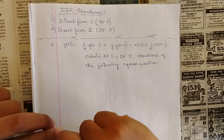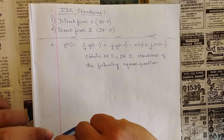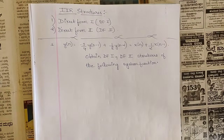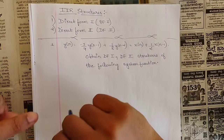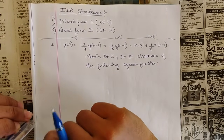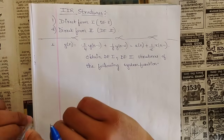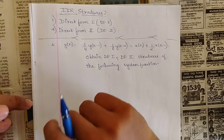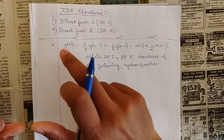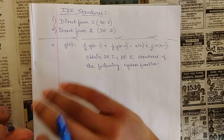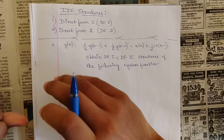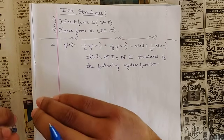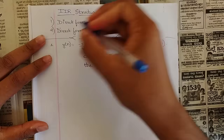Hello everyone, welcome to this new video. In our previous videos we discussed FIR structures — the two different forms: direct form (including linear phase direct form and normal direct form) and cascaded form. We saw how to draw those structures and solve different problems. Those who have not watched those videos, please do watch them. In this session we are going to start with a new concept of Module 5.